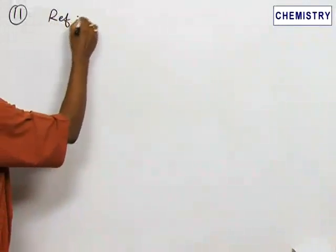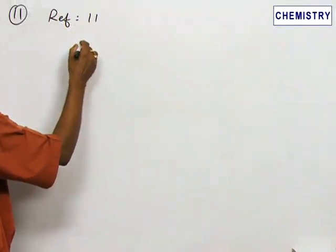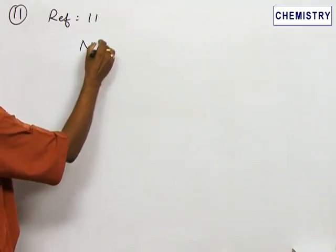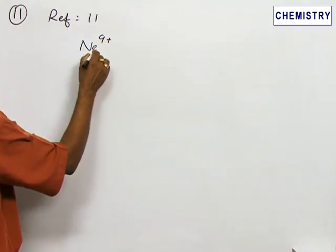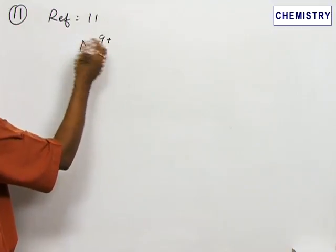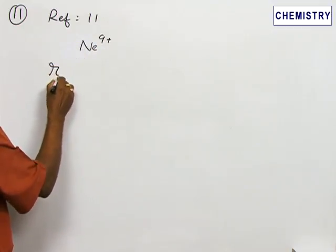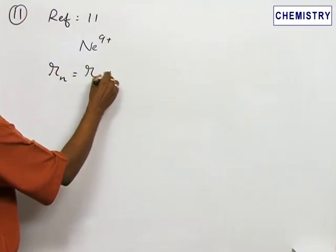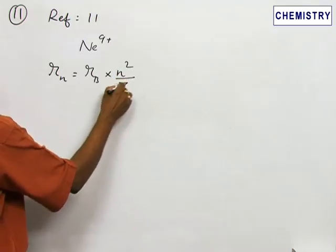Refer to problem number 11, where we are going to calculate the radius of neon 9+ (Ne^9+). This is also a single electron system, therefore we can apply Bohr's formula: R_n = R_b × n²/z.